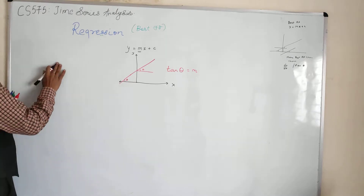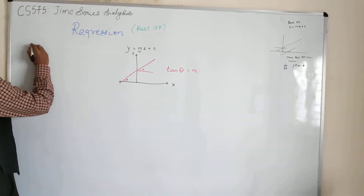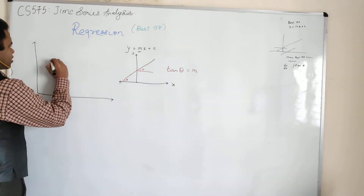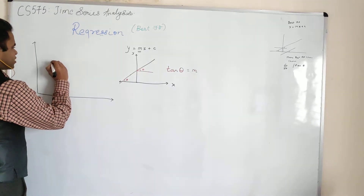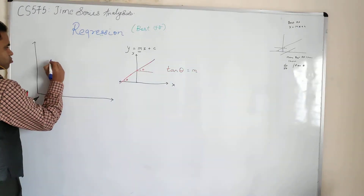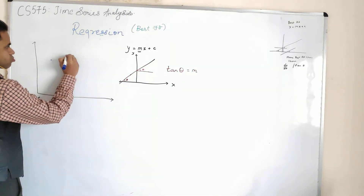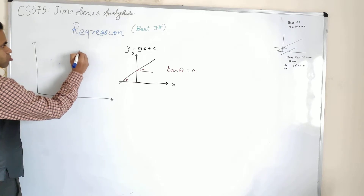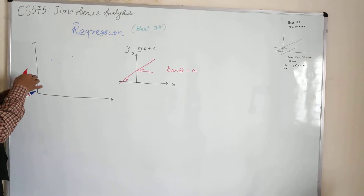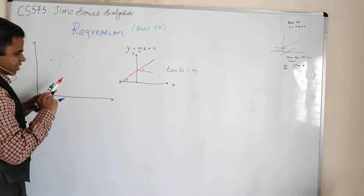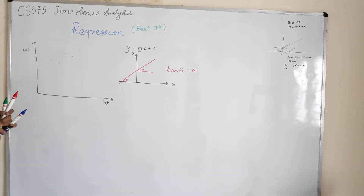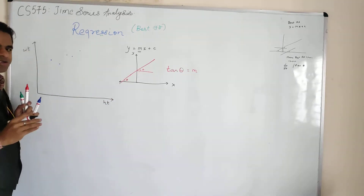So what does regression say? Let us come back to our original example. Whenever we are doing some kind of prediction, let us take a few points. Let us say these are the points — this is the height of a person and this is the weight of a person. In general, when your height increases, your weight will also increase.